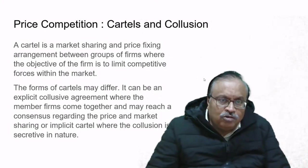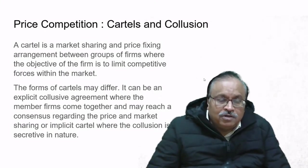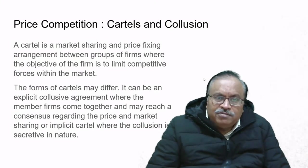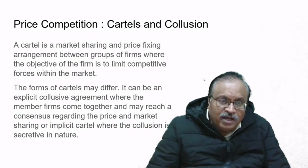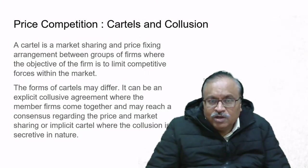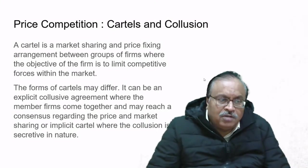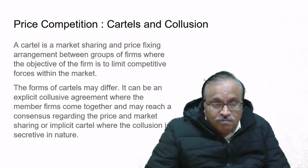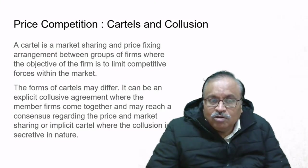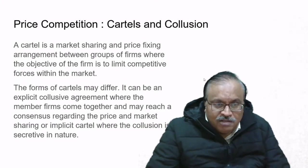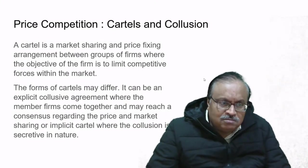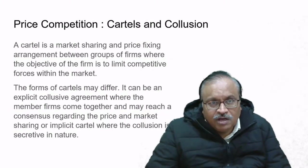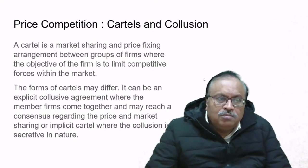Forms of cartels may differ. There can be an explicit collusive agreement where a number of firms come together and reach a consensus regarding price and market sharing. There is also an implicit cartel where the collusion is secretive. An example of an explicit collusive agreement is OPEC—the Organization of Petroleum Exporting Countries—which is essentially a cartel.